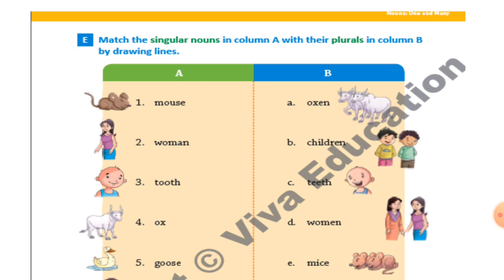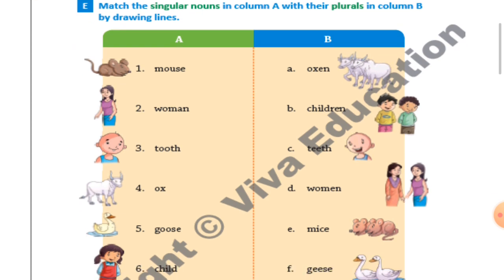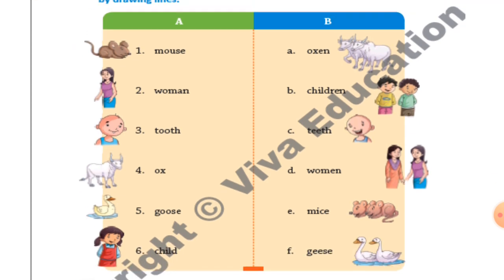Exercise E: Match the singular nouns in column A with their plural in column B by drawing lines. You have to connect singular to plural through lines. Let's start.